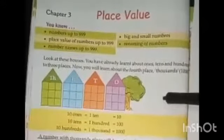Now look at these houses. You have already learned about 1s, tens, 100s, and 3 places. Now you will learn about the fourth place, the thousands place. 10 ones is equal to 1 ten, 10 tens is equal to 100, and 10 hundreds is equal to 1000.